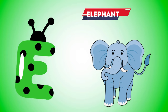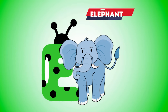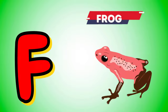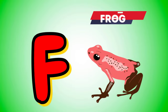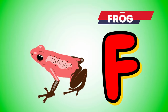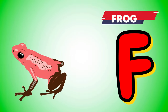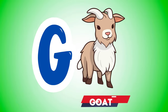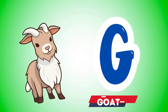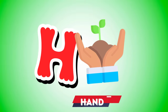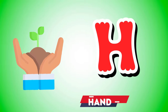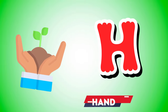E is for elephant, e-e-elephant. F is for frog, f-f-frog. G is for goat, g-g-goat. H is for hand, h-h-hand.